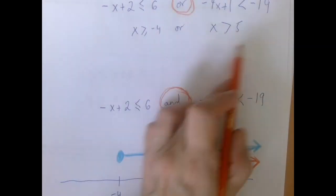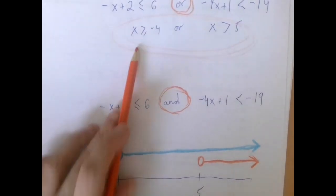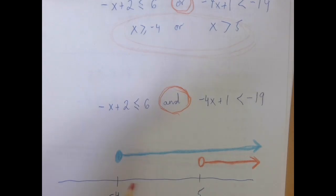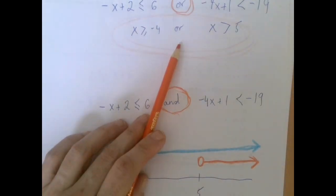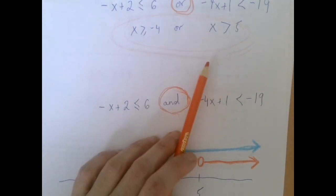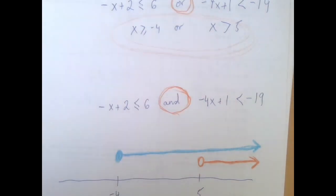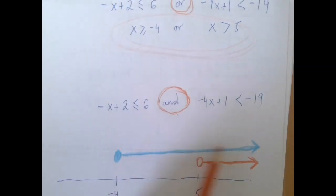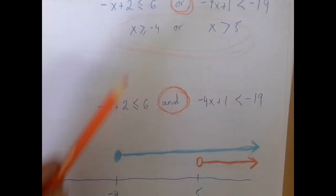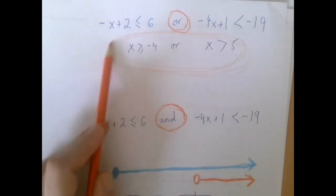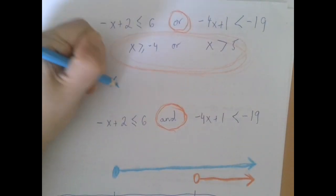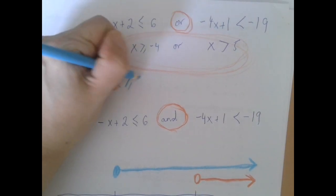So let's solve this one. X is greater than or equal to negative 4 or X is greater than 5. Now when is an or statement true? It's just one truth is enough. So if you scan from left to right, negative 4 will already work. Because negative 4, this starts working. And forever this works.